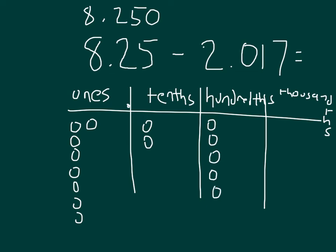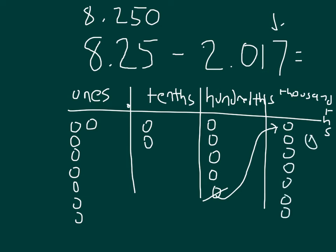To take away 2 and 17 thousandths, the problem is that to take away these 7 thousandths, there are no thousandths to take from. So I will take 1 of the hundredths from the 8 and 25 hundredths — 1 hundredth is worth 10 thousandths — counting out 1, 2, 3, 4, 5, 6, 7, 8, 9, and 10. Now I can go ahead and take away 7 of those thousandths.